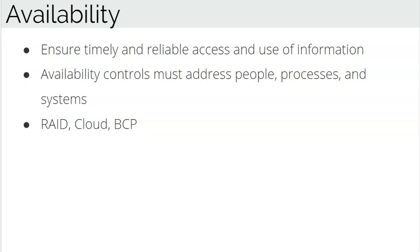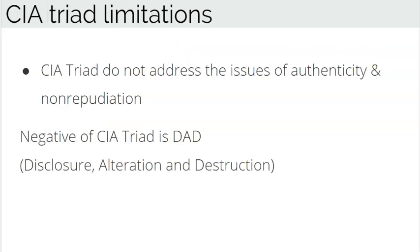The negative of the CIA Triad is DAD — Disclosure, Alteration, and Destruction. The CIA Triad also has some limitations because it is a theoretical model, and actual implementation requires additional security objectives such as authenticity, usefulness, and non-repudiation. That's why NIST Special Publication 800-33 covers five security objectives — three same as CIA Triad, plus accountability and assurance.